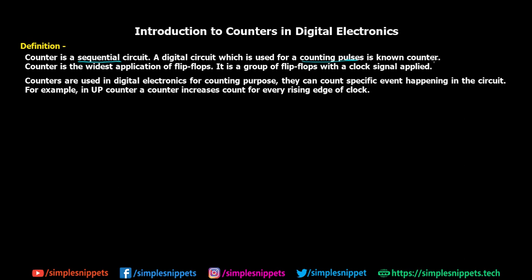So what exactly is counting pulses? We know that digital circuits, especially sequential ones, have a clock input. The clock is a digital signal that goes high and low repeatedly — these transitions are called pulses: the rising edge and the falling edge. These pulses can be counted by using counters, which is why the name suggests counting — because they are used for counting purpose.